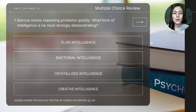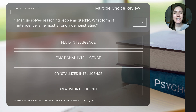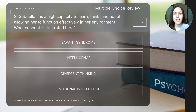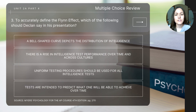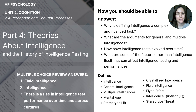Let's finish with some review. Question one: Marcus solves reasoning problems quickly — what form of intelligence is he most strongly demonstrating? Question two: Gabrielle has a high capacity to learn, think, and adapt, allowing her to function effectively in her environment — what concept is illustrated here? And last: to accurately define the Flynn effect, which of the following should Declan say in his presentation? This brings us to the end of today's video. Make sure that you understand our key vocabulary terms and can answer our essential questions.